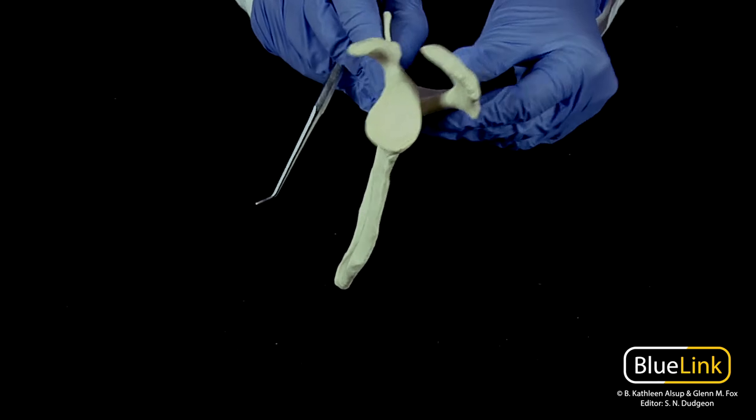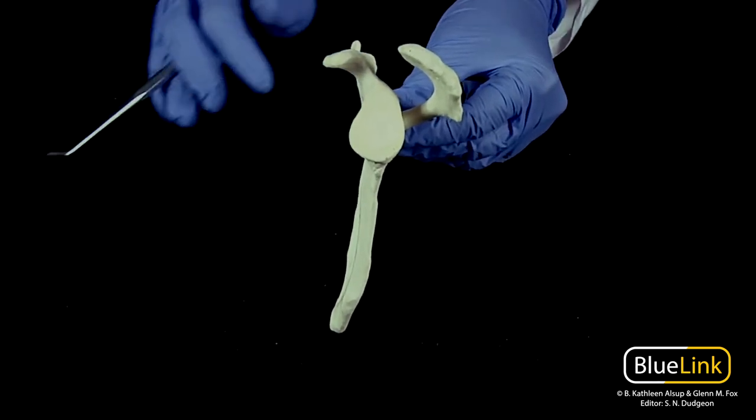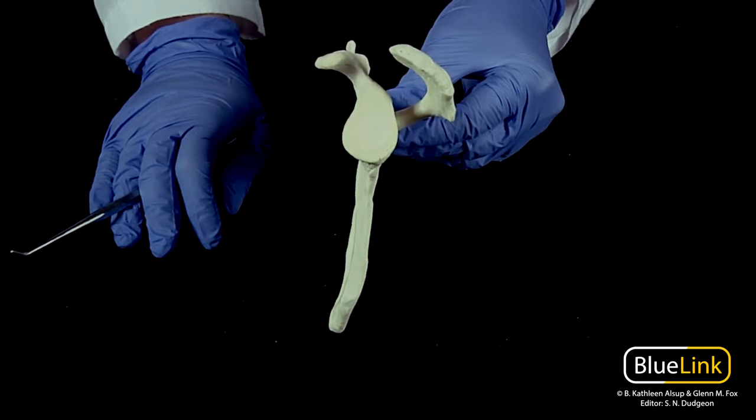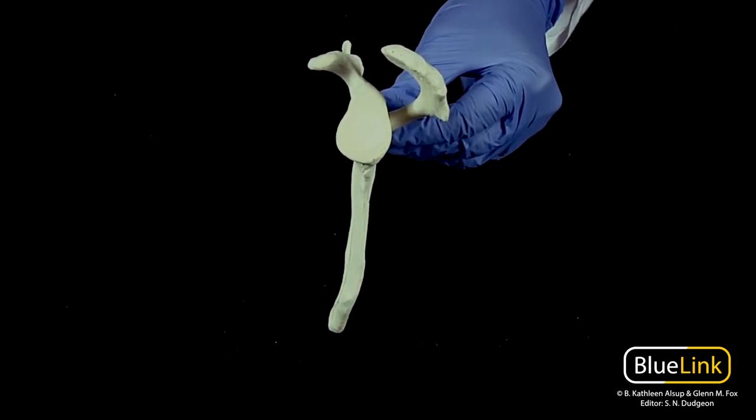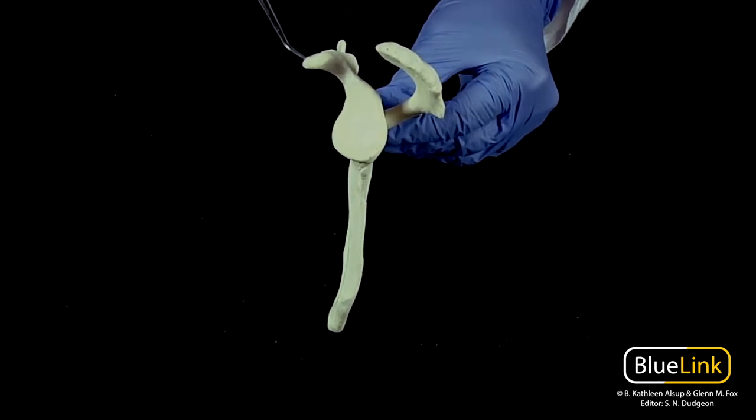One other thing I want to show before I move on to the other features is a lateral view of the scapula. You can see the two main processes: your acromion and your coracoid. So coracoid is going to be the more anterior, acromion will be the more posterior.